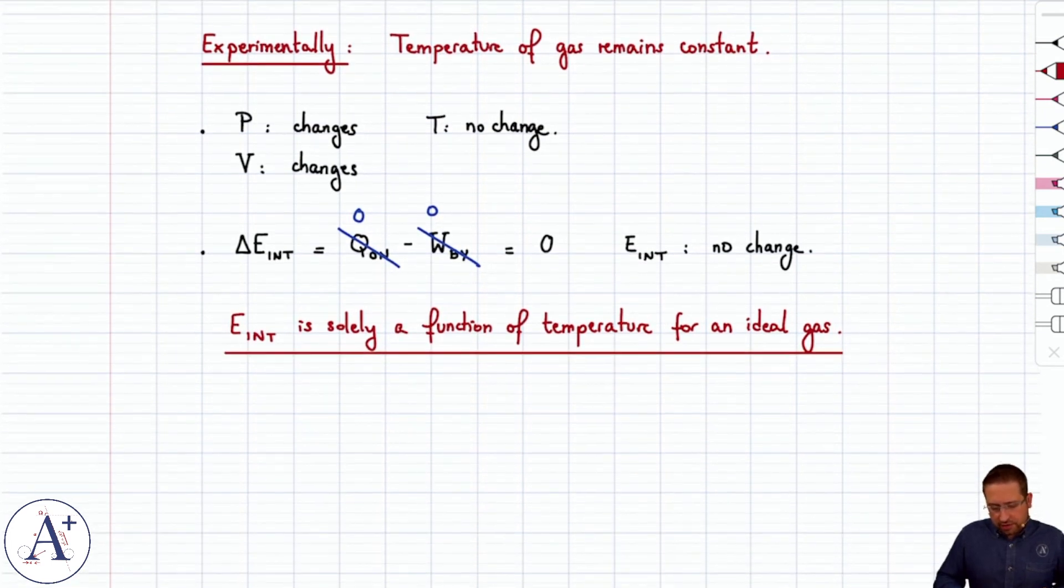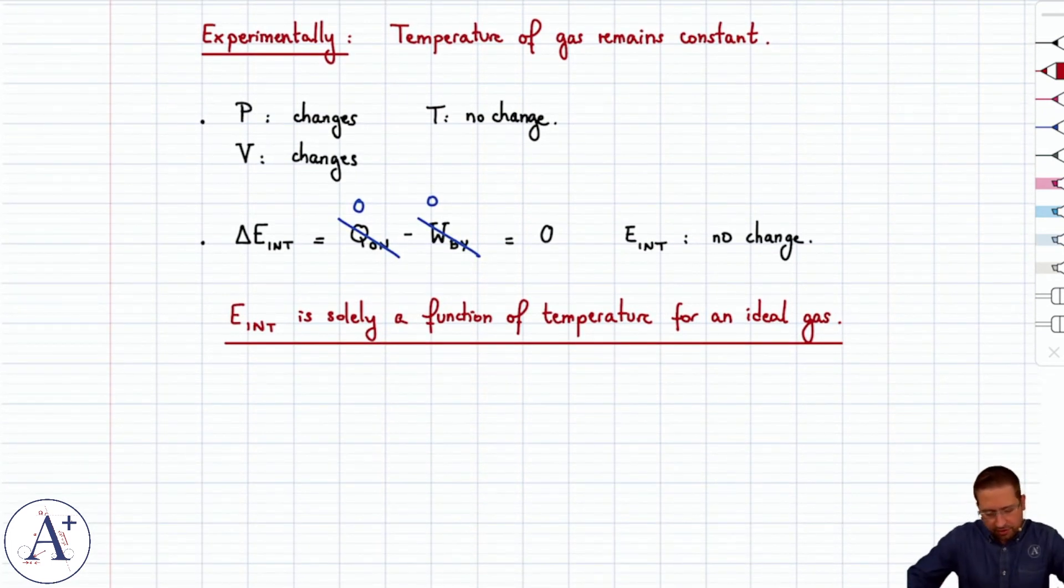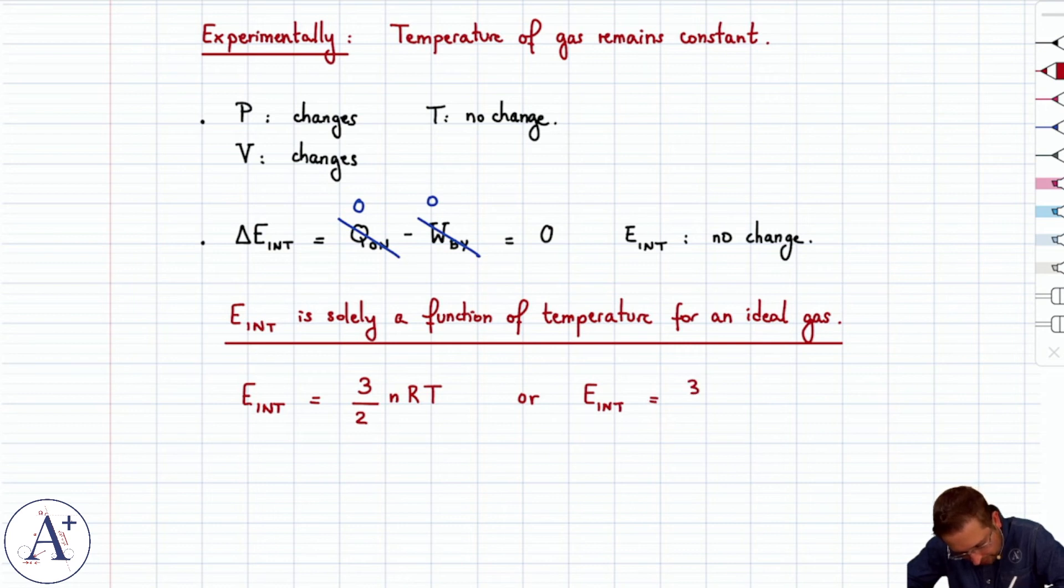But for now, let's just conclude by saying that the internal energy, just as a reminder, for a monatomic ideal gas is equal to three halves of NRT, or if you prefer you can also write it as three halves of capital N KBT. Both forms are equivalent. Depends if you want to think in terms of number of moles or actually number of particles.